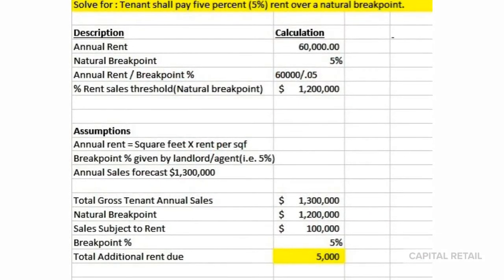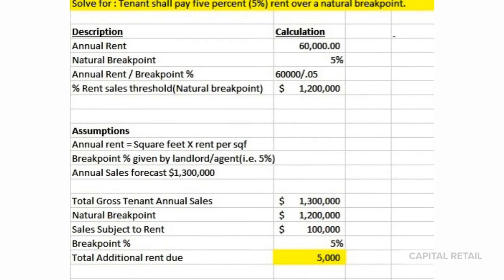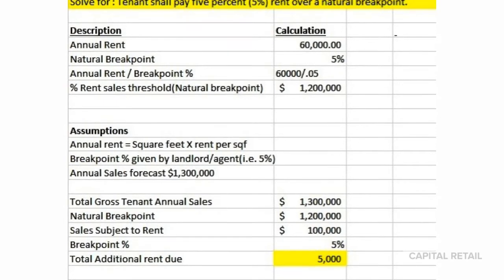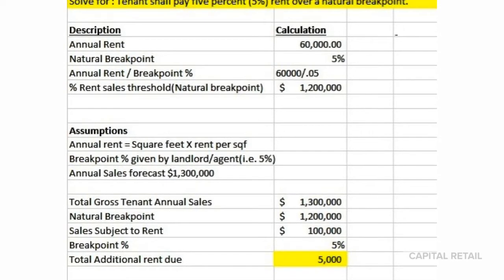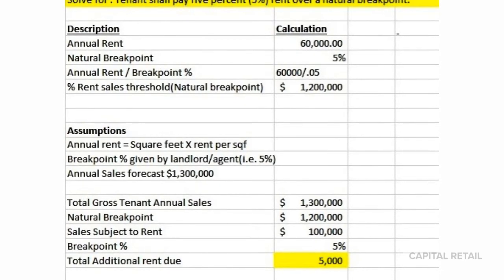Take the annual rent and divide it by the natural breakpoint — that gives you the threshold, which here shows $1.2 million. Then calculate the overage: it's $100,000 times the breakpoint percentage, giving you an annual rent due of $5,000.